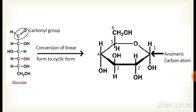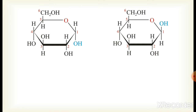When the linear form is converted into cyclic form, the carbonyl carbon atom is known as the anomeric carbon atom, meaning carbon number 1. In this structure, the left side is alpha D-glucose, in which the hydroxyl group is present below the anomeric carbon atom. While in beta D-glucose, the hydroxyl group is present above the anomeric carbon atom.